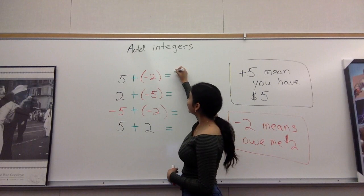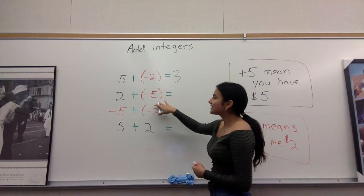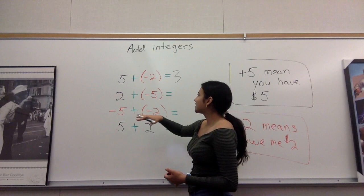The second one, it's a little bit different because the negative number is bigger than the positive number. So let's say you borrowed five dollars from me, I want my money back, but you only have two dollars.